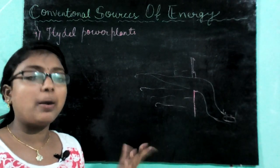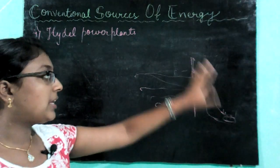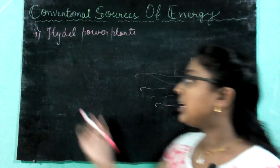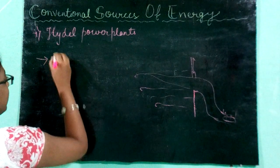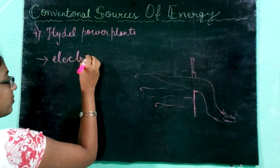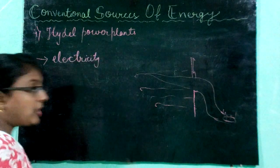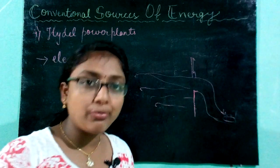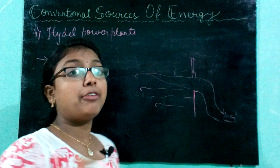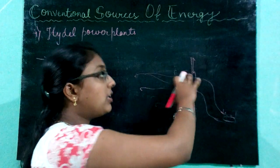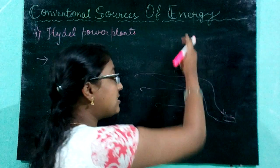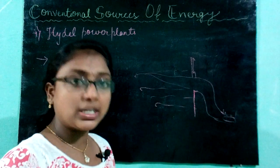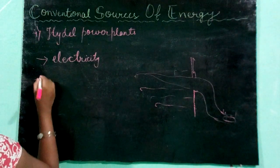What is meant by a multi-purpose project? The first function is that it produces hydroelectricity. The second function is that these dams also control floods — if heavy rainfall occurs and river water is overflowing, a dam can prevent water from going to villages or nearby areas and causing destruction.